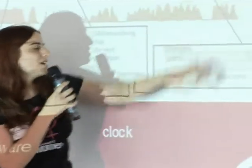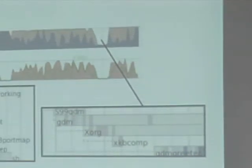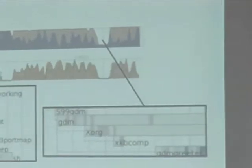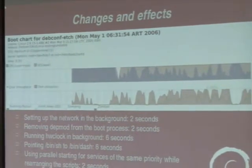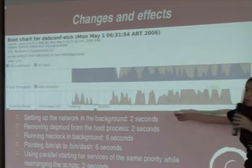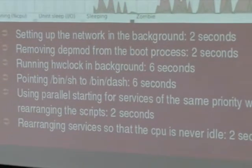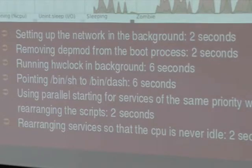GDM also takes a lot of time. There's a gap inside GDM — not in a shell script — it has a sleep 1 hardcoded inside GDM that can't be touched from a shell script. To make it boot faster: first, start the network in the background so we don't have that hole. Then remove DepMod from the boot process, because we only need to run it when we change the kernel — why run it every time the machine boots?